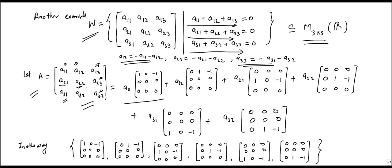So it means we can write this general matrix A as a sum of these matrices, where entry at position (1,1) is 1 and entry at (1,3) is -1. Similarly for others also.